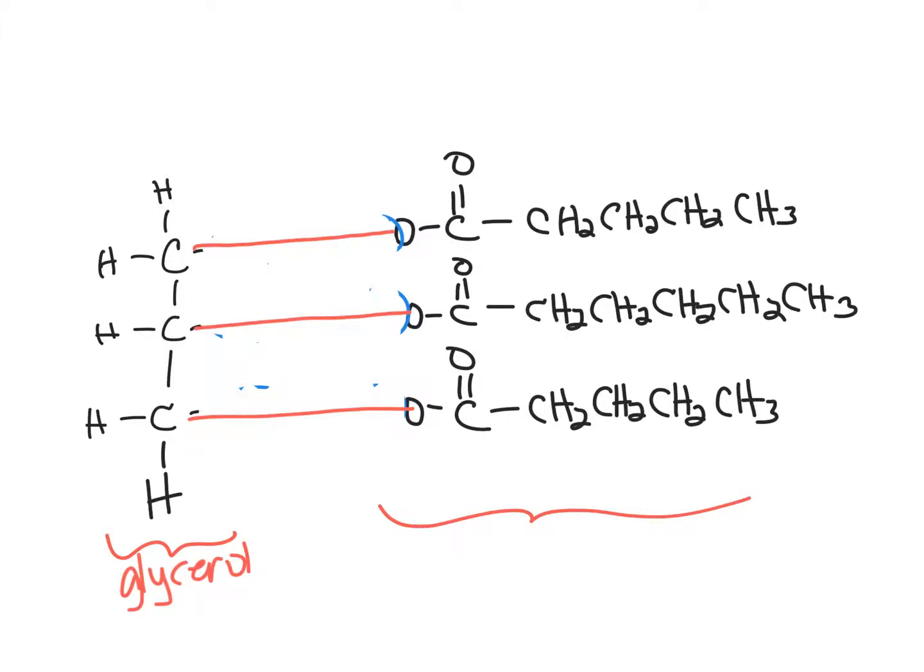So our three carbon chain with the OH groups on it, and then our three separate fatty acids. We would still maintain the same functional group in those final fatty acids, the C double bond O OH. In this case, we're writing the fatty acid that looks a little backwards than we usually write it, but there's nothing wrong with that. We're still just looking at the connectivity of those atoms.